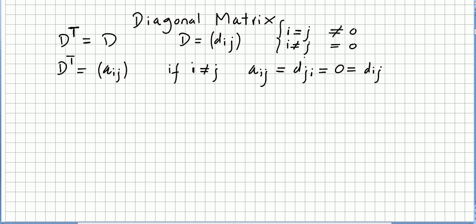Case number one: if i is different from j, then Aij — since this is the transpose of D — Aij will be equal to Dji. But Dji, since j is different from i, will be zero. So Aij will be zero, and Dij will also be zero.